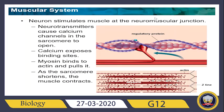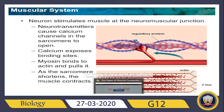Neurologically: the neuron stimulates the muscle at the neuromuscular junction. Neurotransmitters cause calcium channels in the sarcomere to open. When this happens, calcium exposes the binding sites, myosin binds to actin and pulls it inward, and as the sarcomere shortens the muscle contracts.